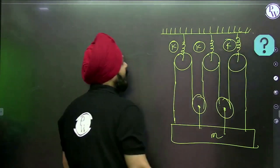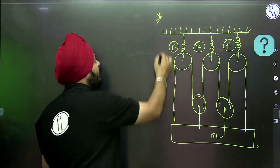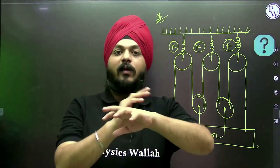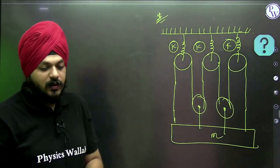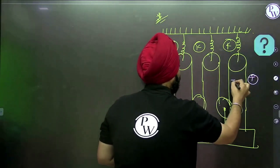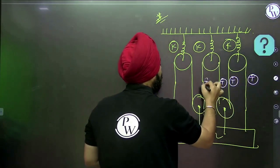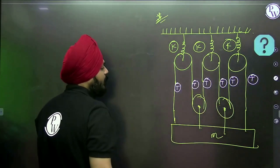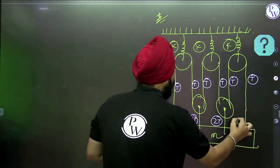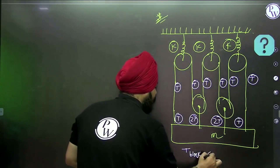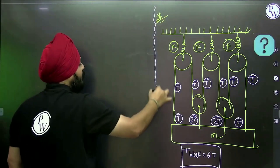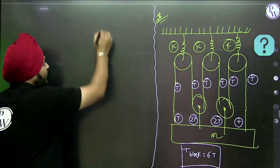In JEE Mains and Advanced level examinations, we do not go with the theoretical approach. So using the shortcut: what is the tension on the block? Suppose the tension in the rope is T — tracing through the pulley system, we get tensions T, T, T on various segments. Two T here, two T here, T and T elsewhere. The total tension on the block is 6T. How many springs are there? We have three springs — consider all in series, but calculate individually.